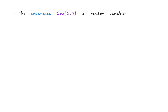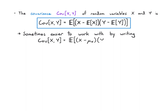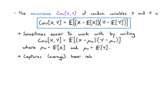The covariance, written Cov(x,y), is defined to be the average value of x minus its mean times y minus its mean. We take x minus its mean, y minus its mean, and average that product. It's easier to work with this as e of (x minus μx) times (y minus μy), where μx is the mean of x and μy is the mean of y. This solidifies the fact that these means are just numbers we're subtracting — we don't have to think of them as random.